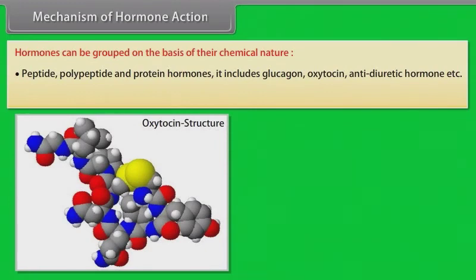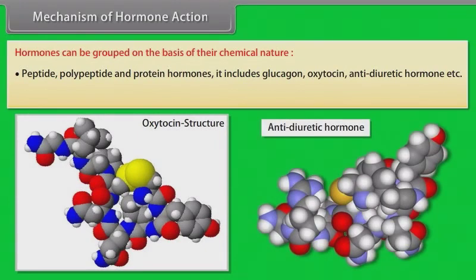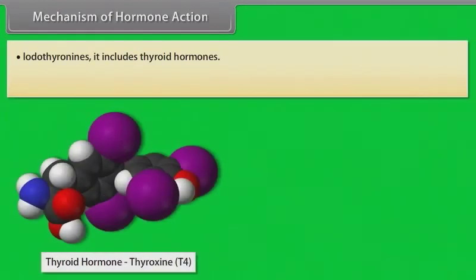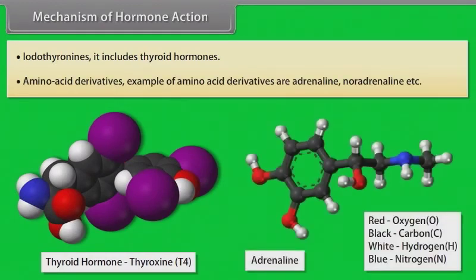Peptide, polypeptide and protein hormones include glucagon, oxytocin, anti-diuretic hormone, etc. Steroids include glucocorticoids, mineralocorticoids, testosterone, estrogen, progesterone, etc. Iodothyronines include thyroid hormones. Amino acid derivatives include adrenaline and noradrenaline.